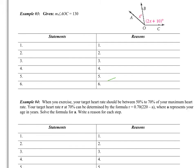The question is: find the value of X. We are given that the measure of angle AOC — this whole angle — is 130 degrees. So we need to write that as our first statement: the measure of angle AOC is equal to 130 degrees, and the reason is given. You can add two angles and set them equal to the larger angle. So X is angle AOB, BOC is 2X plus 10, and that equals 130, our entire angle. This is called the angle addition postulate.